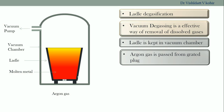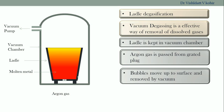We use argon gas, passed through the ladle from the bottom. When the argon gas passes through the molten metal, it carries away hydrogen with it. We want small bubbles which will have a longer retention time in the ladle so that the maximum portion of the dissolved gas elements can be removed from the molten metal.